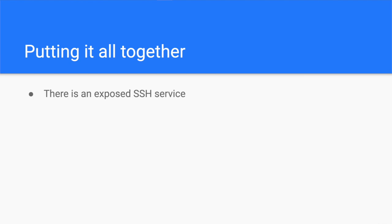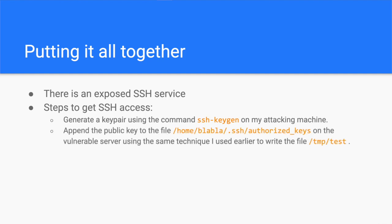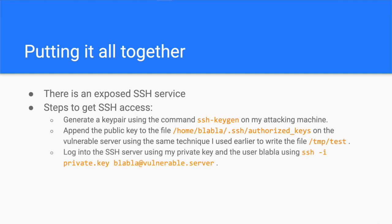Finally, let's get an SSH shell. The server is running a publicly accessible SSH server — so what if I could log in without any need for a password? To achieve this, I followed these steps: first, generate a key pair using the command ssh-keygen on my attacking machine. Then, append the public key to the file /home/[user]/.ssh/authorized_keys on the vulnerable server, using the same file-write technique used earlier for /tmp/test. Finally, log into the SSH server using my private key and the target user, with the command: ssh -i private_key [user]@vulnerable_server.